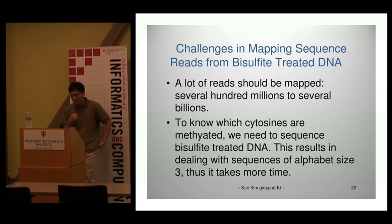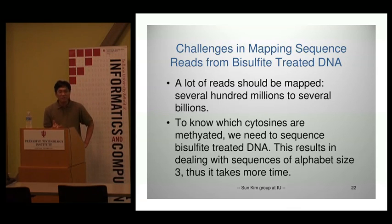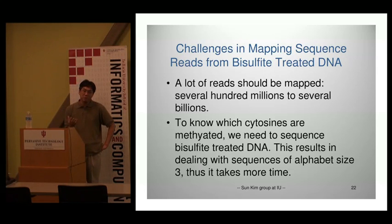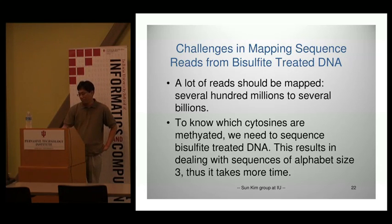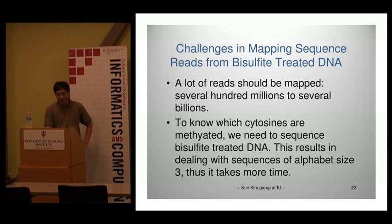Mapping sequence reads from bisulfite-treated DNA is challenging — there are several hundred million to billions of reads for one cell line. Because of bisulfite treatment, we basically have a three-letter alphabet instead of DNA's original four-letter alphabet. Computer scientists can imagine that mapping with only three letters takes a lot more time. Here is an example of real data — the ADAM-12 gene promoter and DNA methylation. After sequencing and alignment, we count how many CGs and TGs in one column to know the methylation level for a specific cytosine.